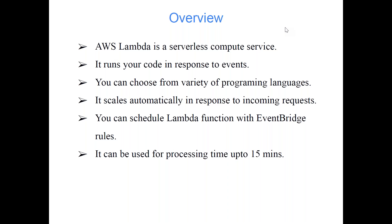You can also schedule a Lambda function with EventBridge rules in case you don't want to use event-based triggers. For example, you know you want to perform some action every day at 9 p.m. — maybe a cleanup activity where Lambda scans your S3 bucket and deletes files older than 30 or 7 days. So if you have scheduled maintenance or scheduled data processing every day at 9 p.m., we can schedule this Lambda function.